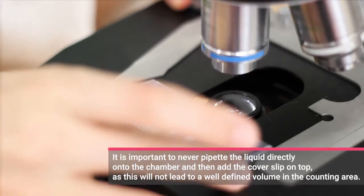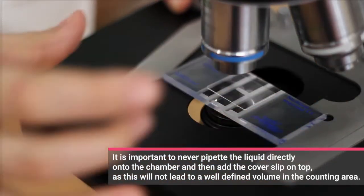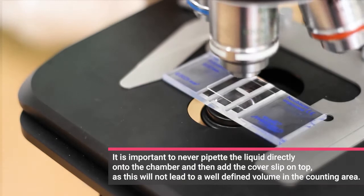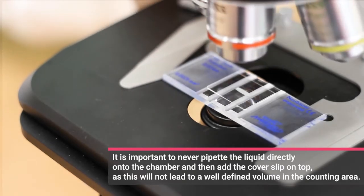Place the chamber under the microscope and choose a low magnification. Focus on the quadratic structure called counting grid and see if the cells are spread equally. Now choose a proper magnification and use phase contrast to see the counting grid in more detail.